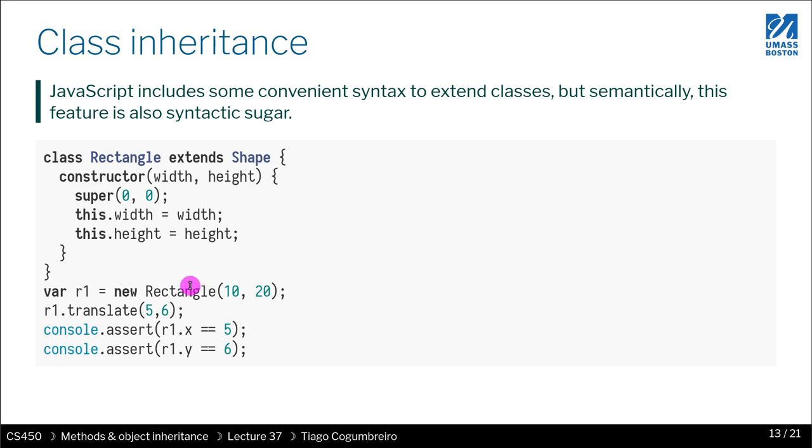Then we create a new Rectangle by doing new Rectangle and passing the width and height that we want, and we can still use a method from Shape translate and pass 5 to 6, which will shift and update the X and Y fields of Shape that are defined also in Rectangle. This is the behavior that hopefully is intuitive for you. You already understand class extension, I hope.